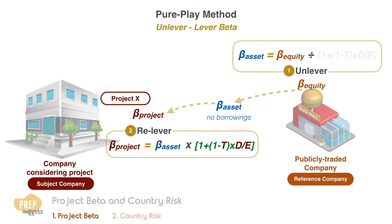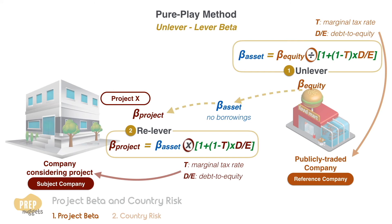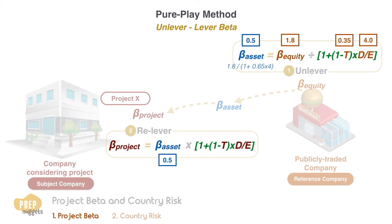The first thing you should remember is this term. When you unlever the beta of an equity, T is the marginal tax rate and D/E is the debt-to-equity ratio of the reference company, and you divide the beta of the stock with this term. For example, if the beta of the publicly traded company's stock is 1.8, its debt-to-equity ratio is 4.0, and its marginal tax rate is 35%, the beta of the asset without leverage will be 0.5.